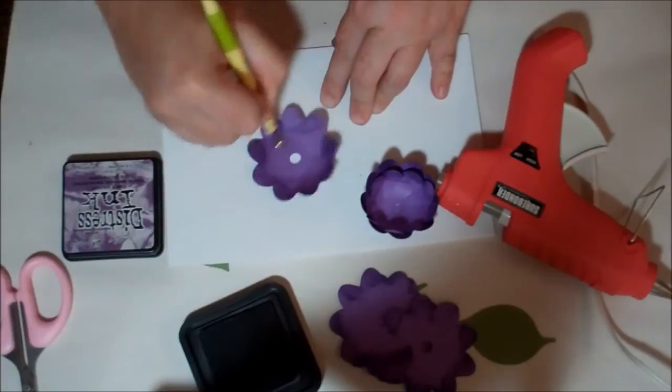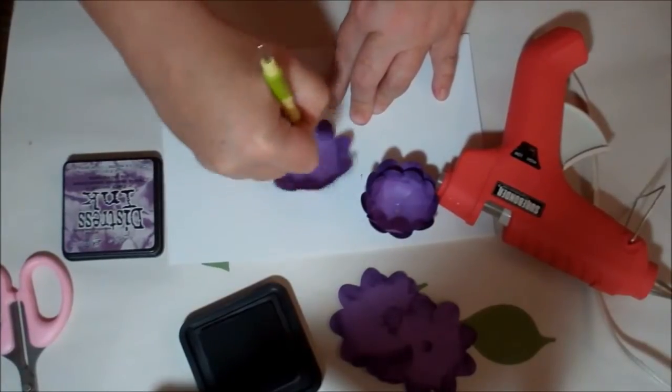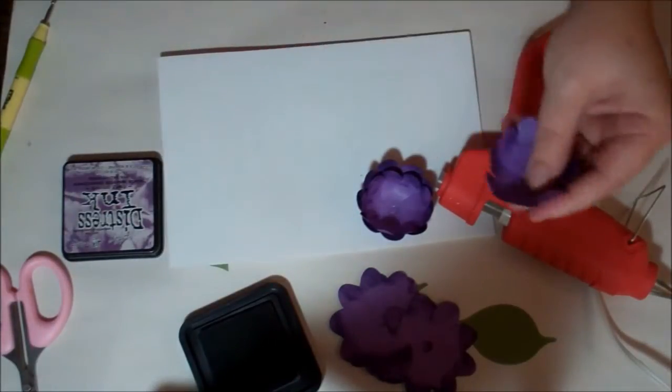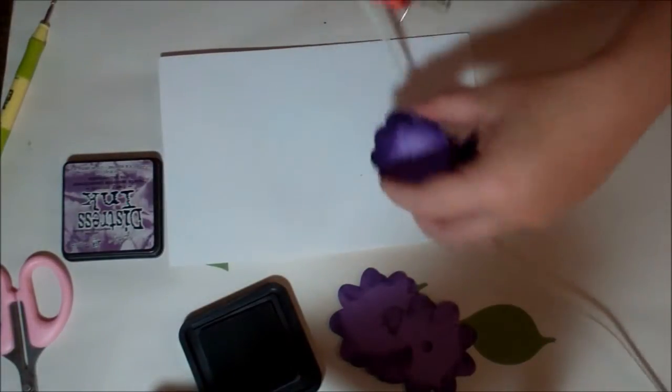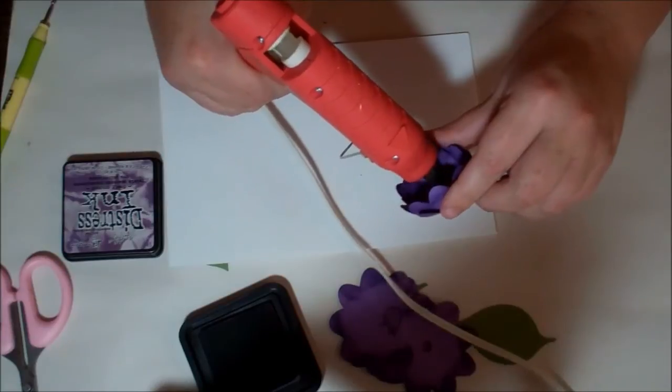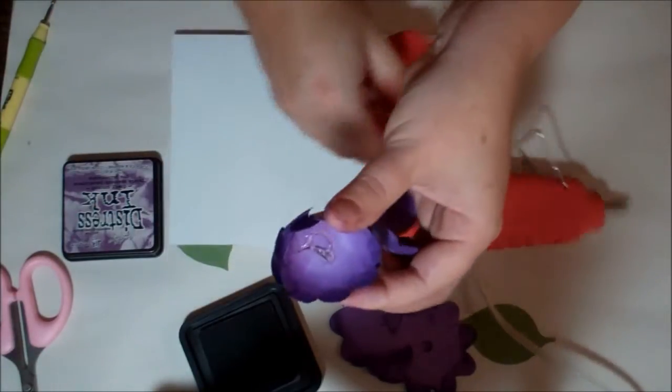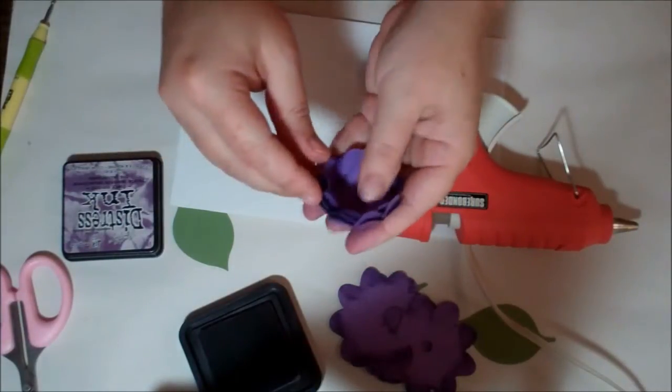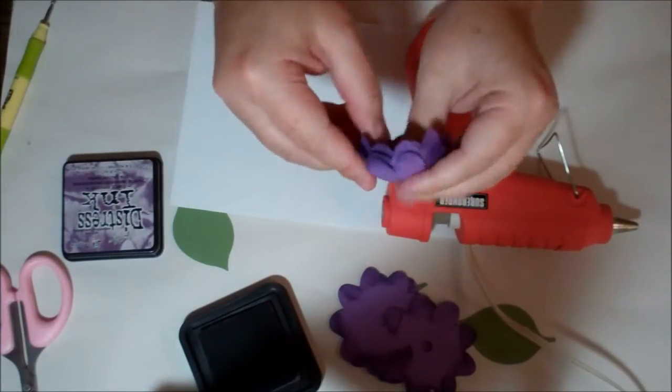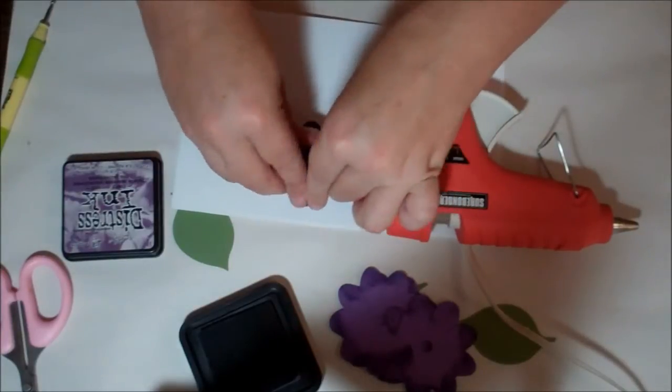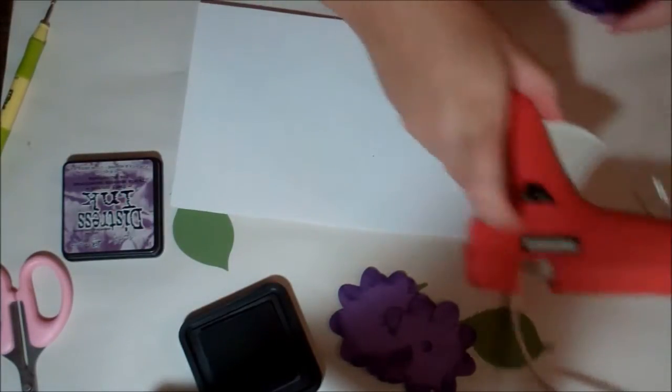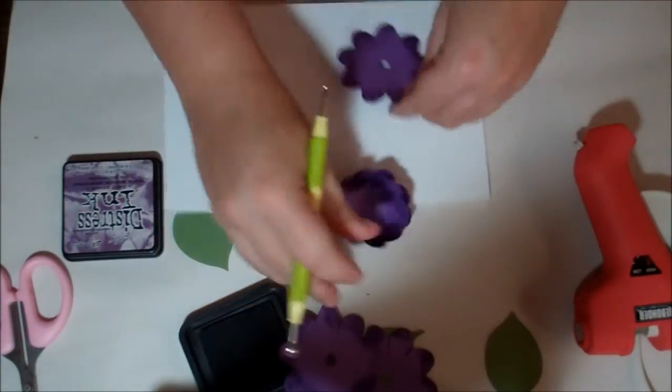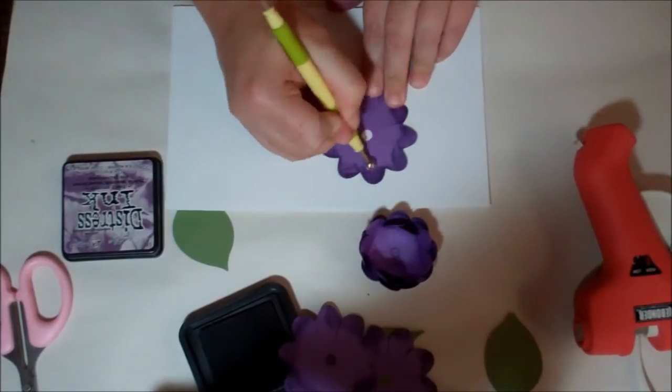So on the first three, you're just putting glue right down the center like this and just getting this in and alternating your petals. Then you want to do your next one, same technique, just go around the petals.